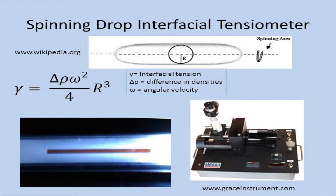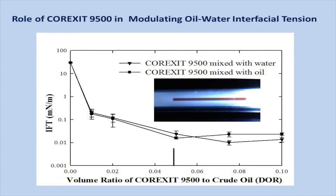Without any addition of dispersant, Corexit gives something like 40 millinewtons per meter. When you add Corexit, you see how much you've dropped the interfacial tension — from something like 40 down to something like 10 to the minus two. You've dropped γ so much that dA, the area, increases three orders of magnitude. So you've broken up a flat slick into tiny little droplets. That's the basic concept.